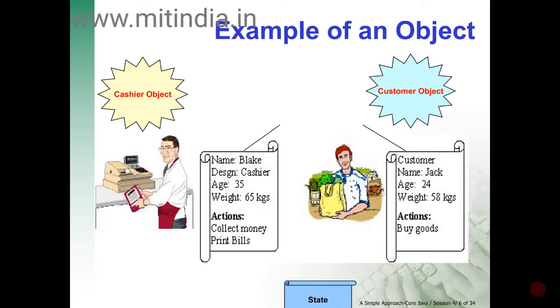Cashier is an object, customer is an object also. Cashier has a name, designation, age, weight, etc., and can do some actions like collecting money from the customer and printing bills.